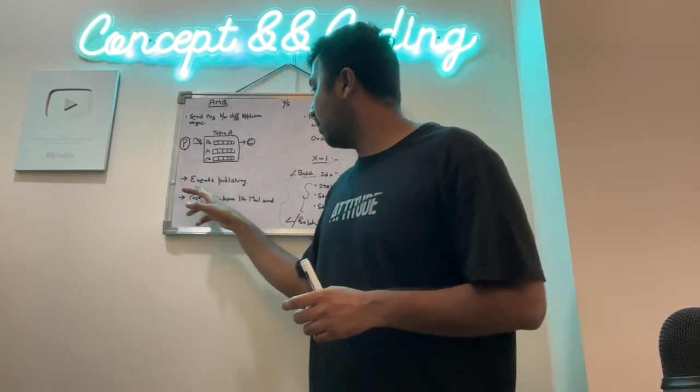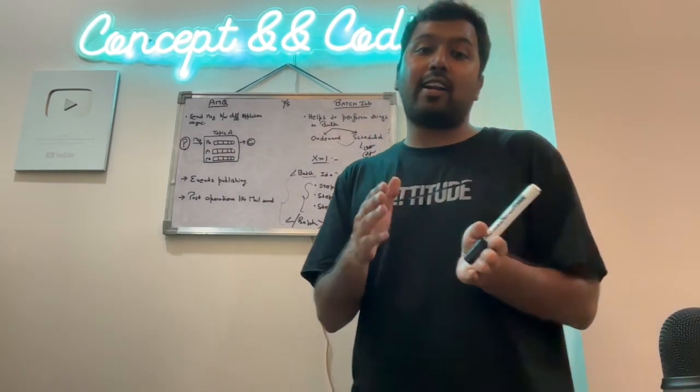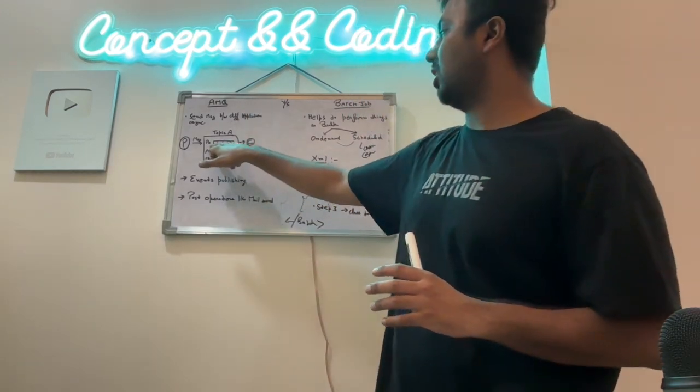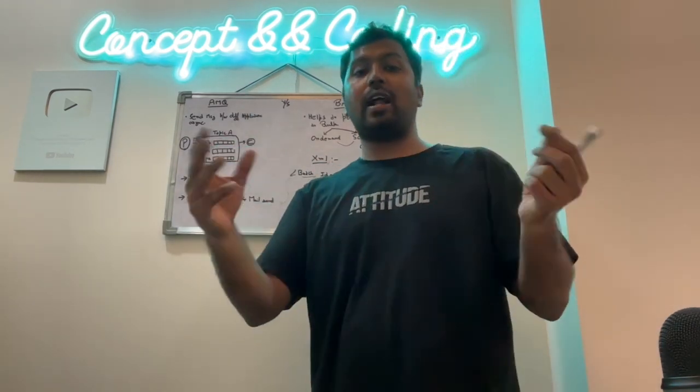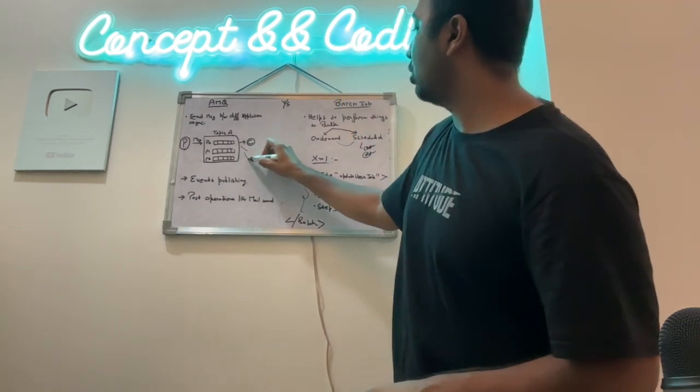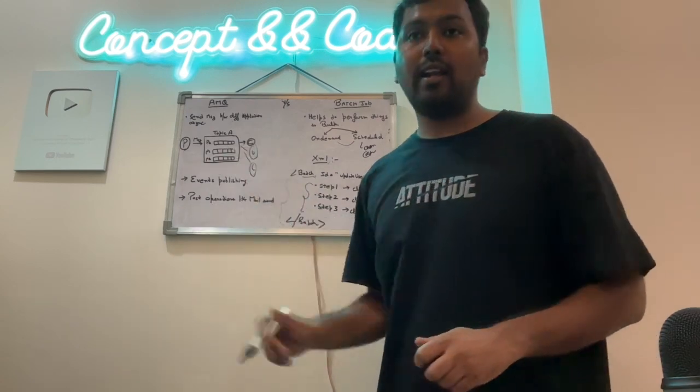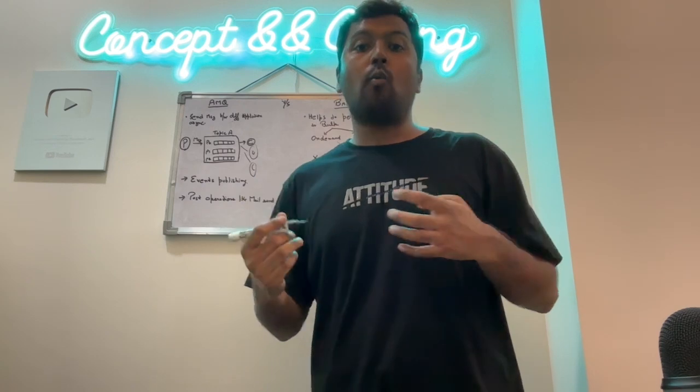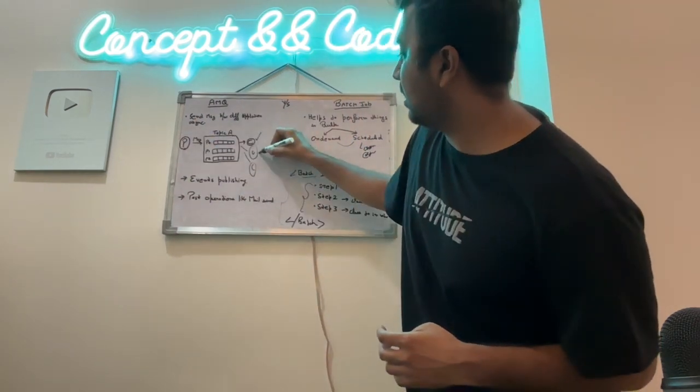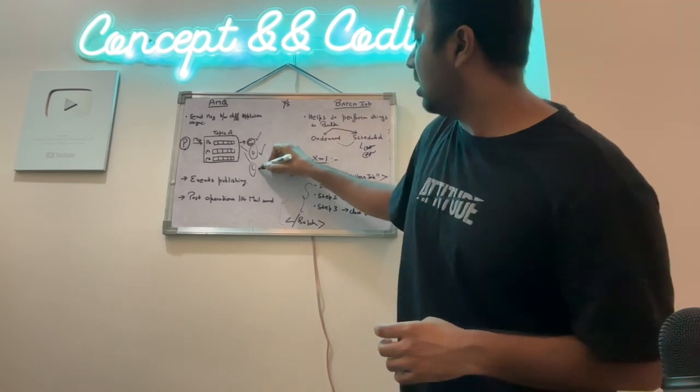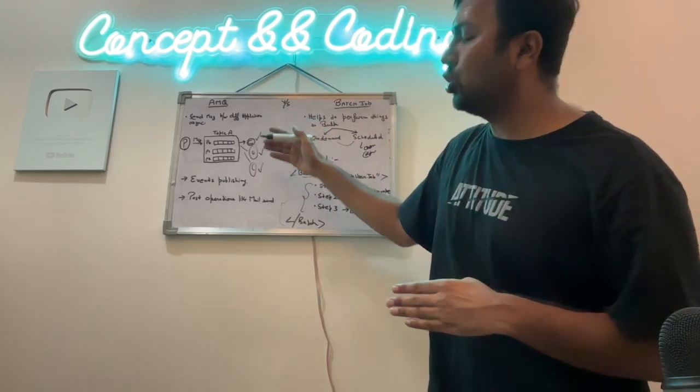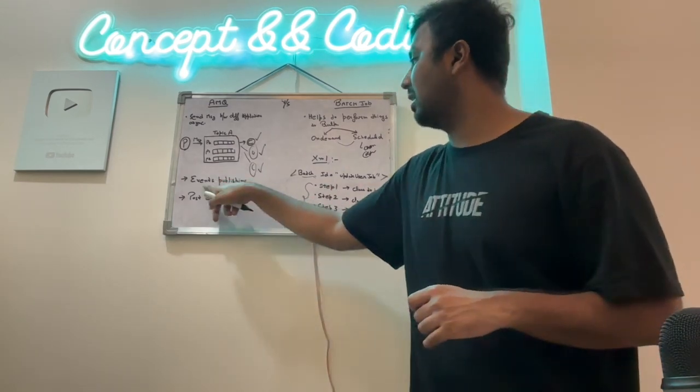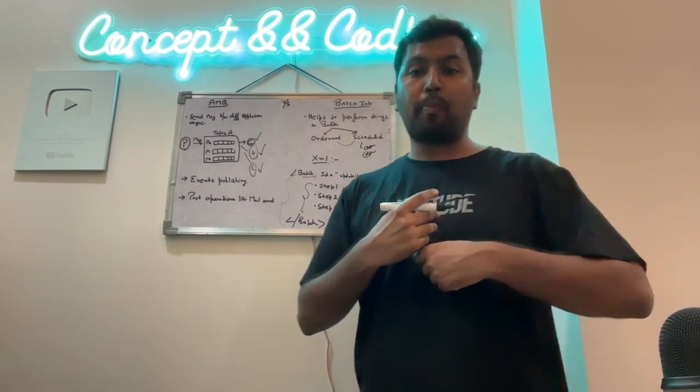Second is event publishing. Now let's say that you have added a user. You just publish to a particular partition or topic, user has been added. Now there can be multiple consumers which are consuming it. Now I have got the message, user has been added. So this is sending a mail, this is doing something else. So each consumer is doing some different operation. So event publishing, that's what we call it as event publishing.